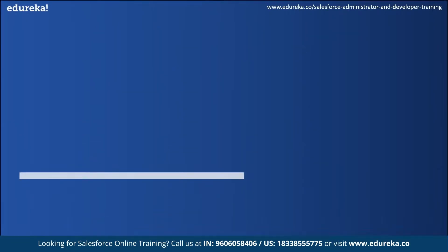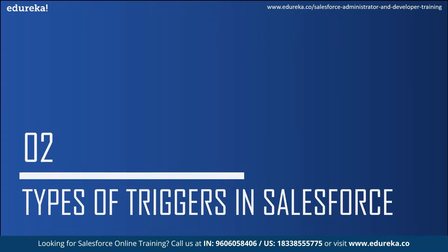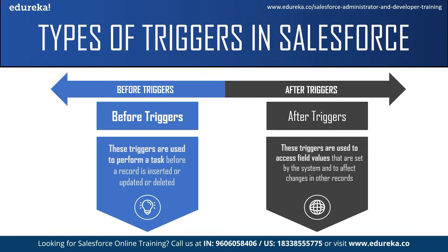There are two types of triggers in Salesforce. The first one is the before trigger and the second one is the after trigger. As the name suggests, before triggers are used to perform a task before a record is inserted, updated, or deleted. These triggers are usually used to update or validate record values before they are saved to the database. After triggers are used to access field values already set by the system, such as a record's ID, date, or phone number field, and to affect changes in other records as well. These triggers are usually used to update or validate record values after they are saved to the database. Also, after triggers are read only — you cannot make any changes to them.